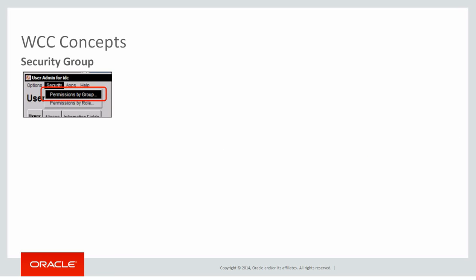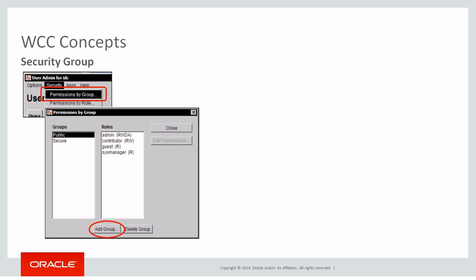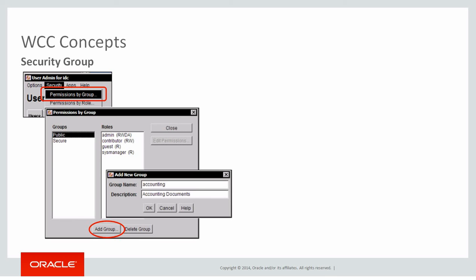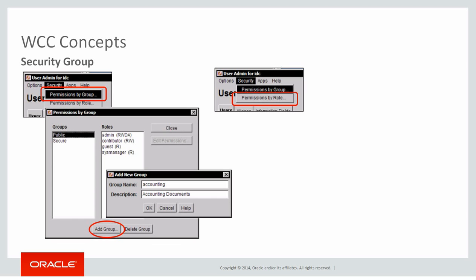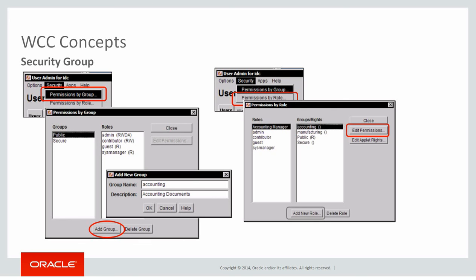Next, we'll see how to create a security group in WCC. Once you log in as administrator and bring up the admin applet, you can click on the user administration icon and bring up the user admin window. Under the security menu, you'll see 'Permissions by Group.' When you click on that, a window opens showing default public and secure out-of-the-box groups. To add more groups, click the 'Add Group' button, give a new group name and description, and click OK — for example, adding a group called 'Accounting.' Next, go to the security menu again and select 'Permissions by Role,' which opens a window showing roles on the left side and the newly created 'Accounting' group.